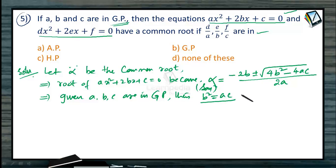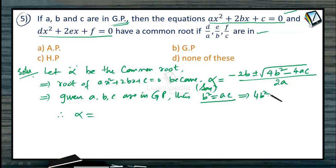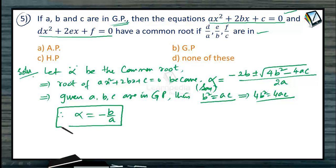Since B² = AC, the term 4B² - 4AC equals zero. Taking 4 as a common factor, B² = AC nullifies the square root term. So the value of alpha becomes -2B / 2A, which is simply -B/A. This is the common root for both equations.